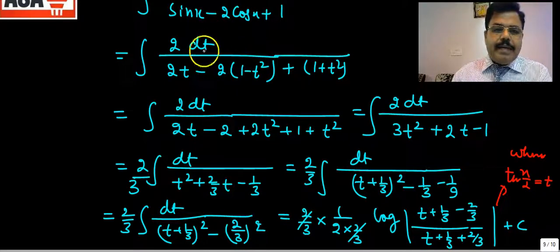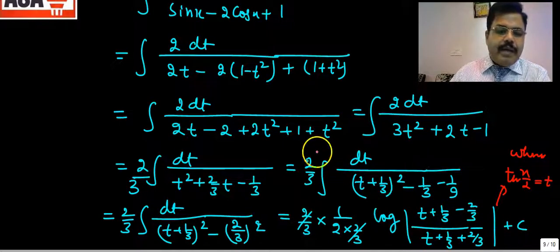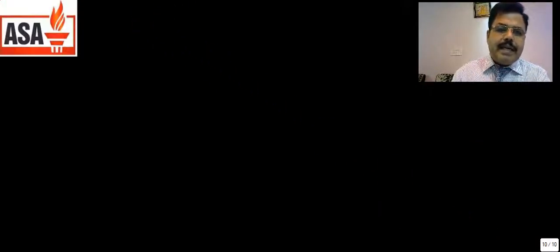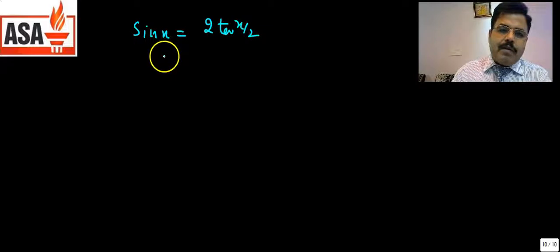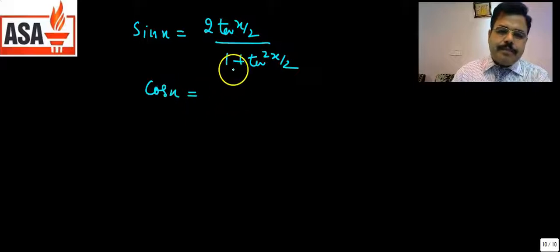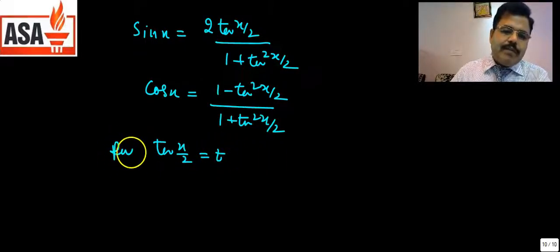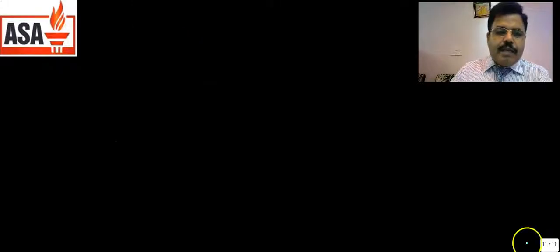So what I mean is: by writing it directly, you get an idea of the form of the function, and you can identify the answer from the options. This is how the question is solved without difficulty. Whenever you have such a question, you always substitute sin x as 2tan(x/2)/(1 + tan²(x/2)), cos x as (1 - tan²(x/2))/(1 + tan²(x/2)), then put tan(x/2) = t. Let us take one more question.